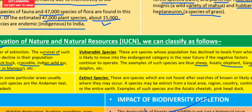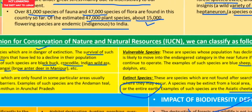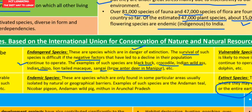Extinct species are those not found after searches of known or likely areas. A species may be extinct from a local area, a region, a country, a continent, or the entire earth. Examples include the Asiatic cheetah and the pink-headed duck, which are now extinct from this earth.